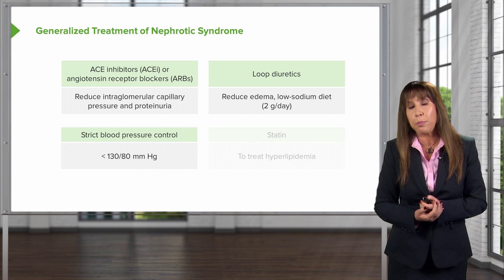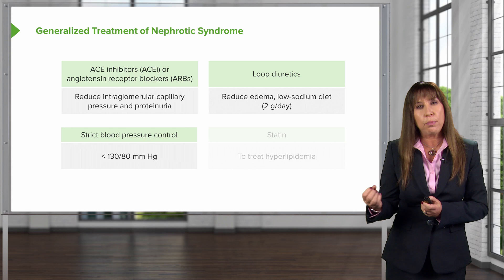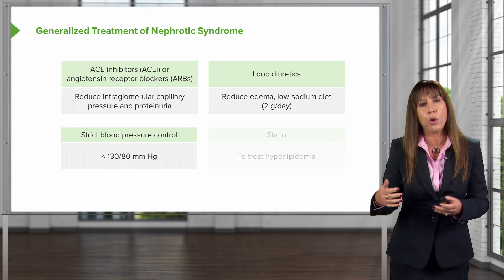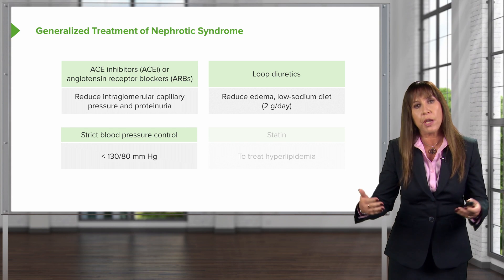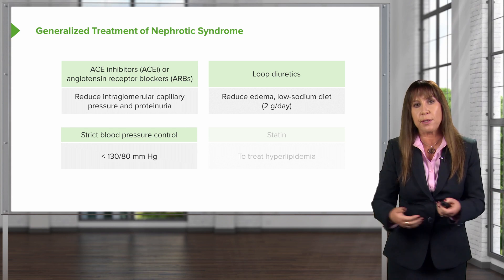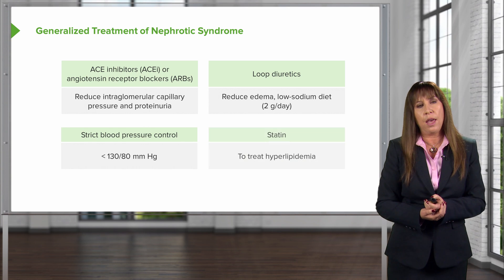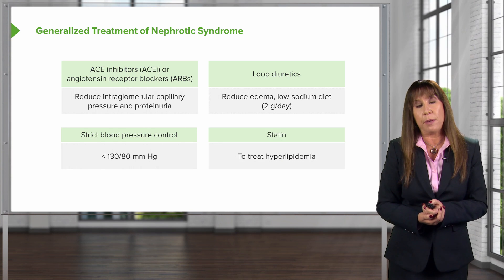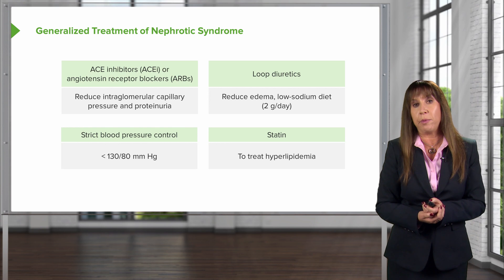I also want strict blood pressure control in these patients. A blood pressure of less than 130 over 80 is going to be helpful in reducing proteinuria and helping to slow this disease process. Finally, I want to treat their hyperlipidemia with a statin — an HMG-CoA reductase inhibitor.